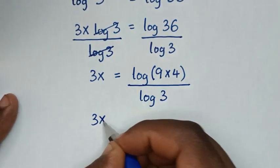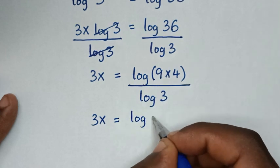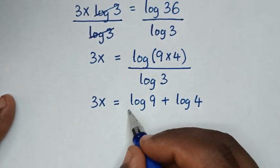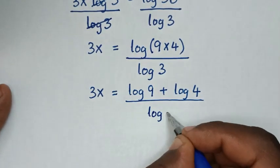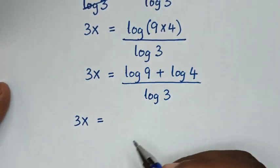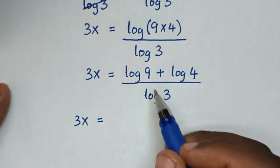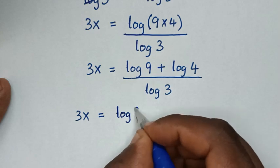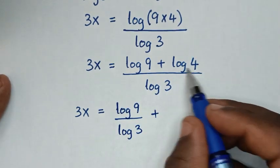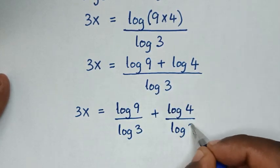So 3x is equal to log of 36, which equals log of 9 over log of 3 plus log of 4 over log of 3.